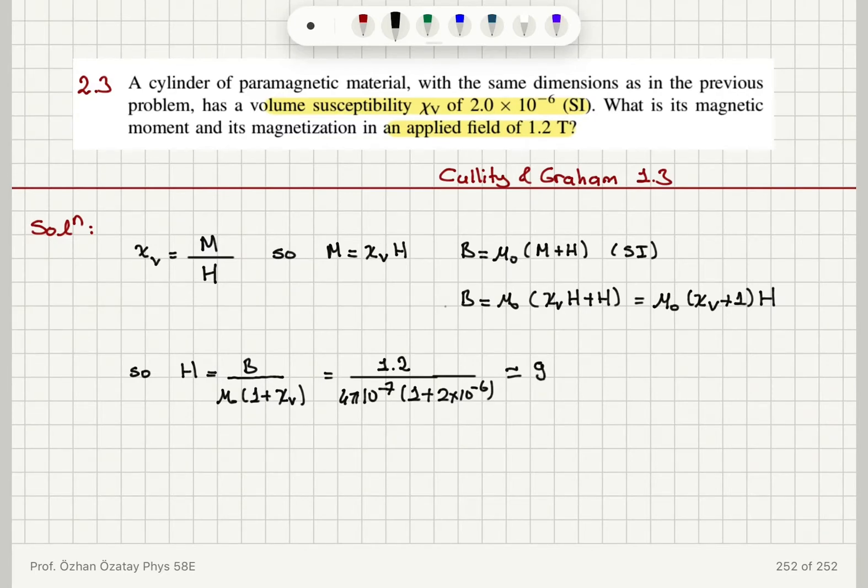And we can obtain the magnetization by multiplying the magnetizing field with the volume susceptibility. It is 2×10⁻⁶ multiplied by 9.55×10⁵, and therefore we obtain a magnetization of roughly 1.91 ampere per meter.